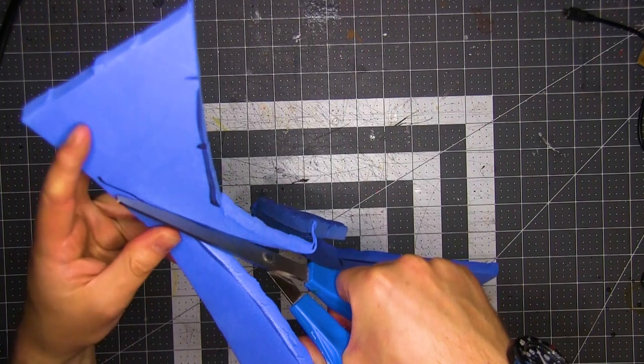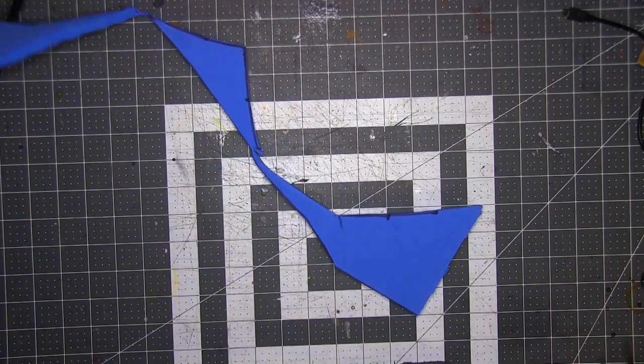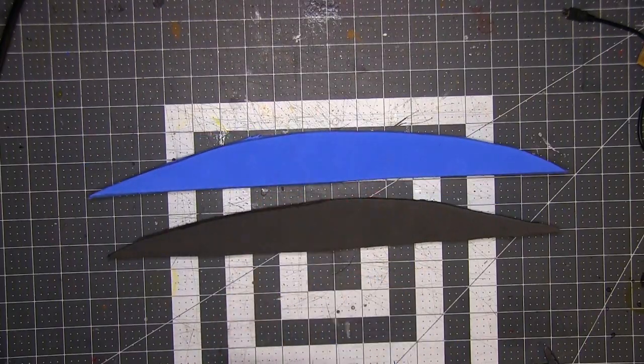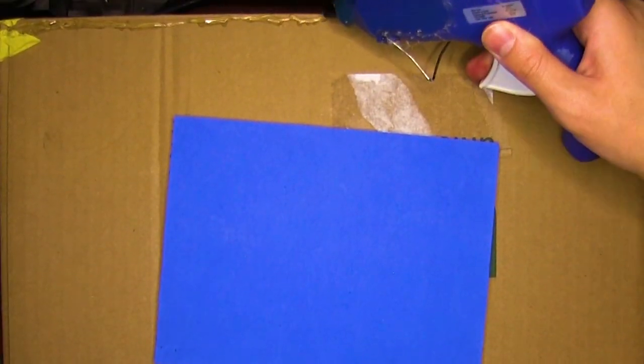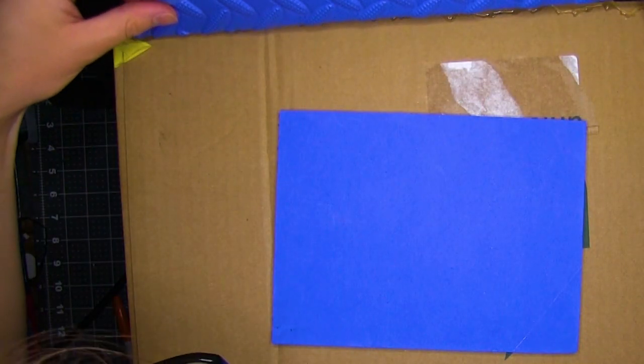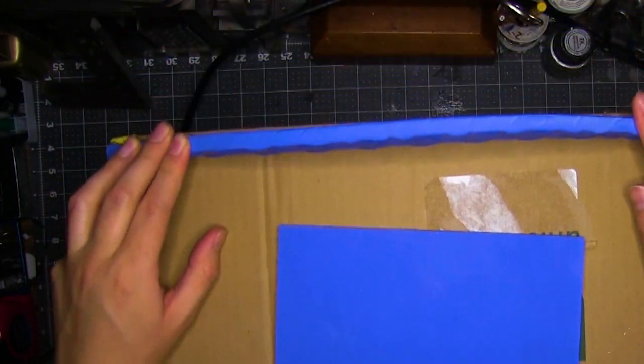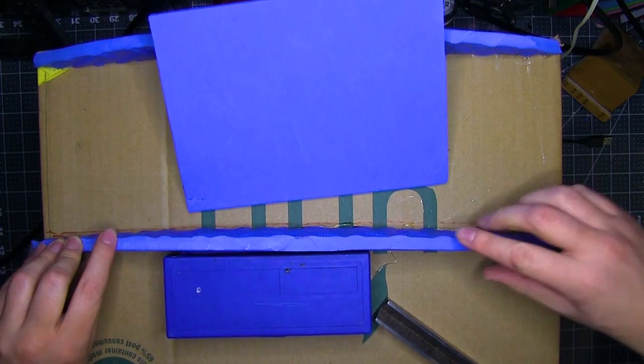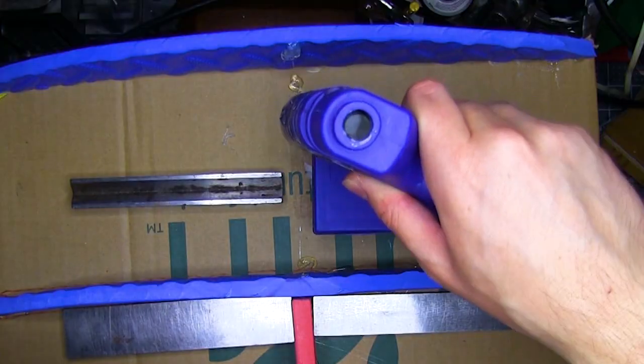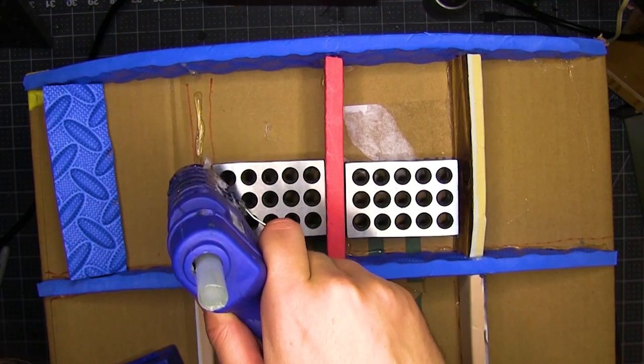Then I cut scrap pieces of foam floor mat into curved pieces. After that, I hot glued them to one of the sides of the box. I guess the broad side. These will act like the ribs of a ship, giving the exterior a curved surface.